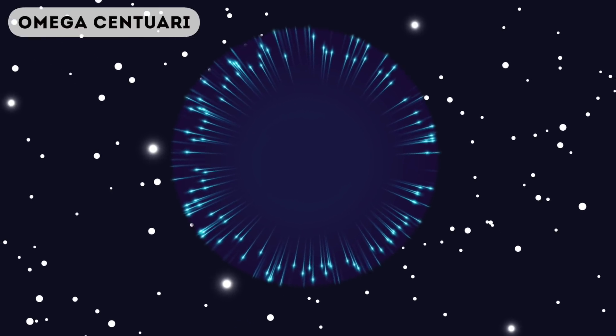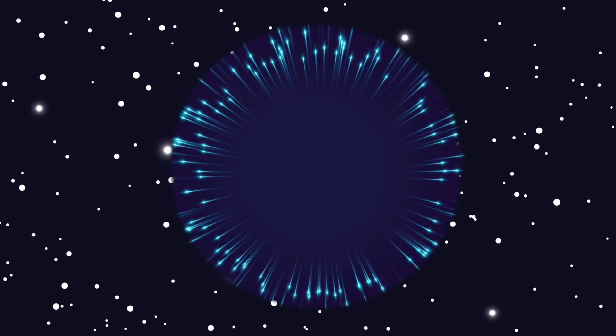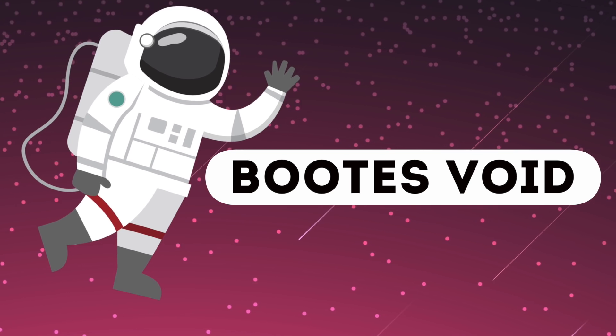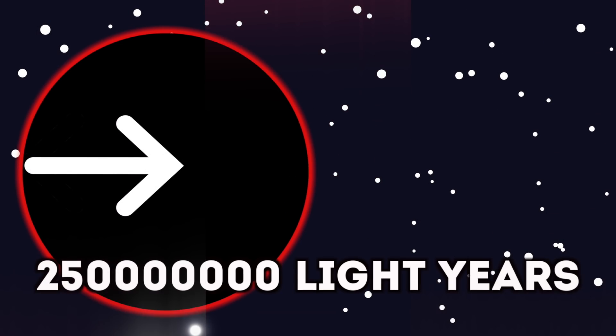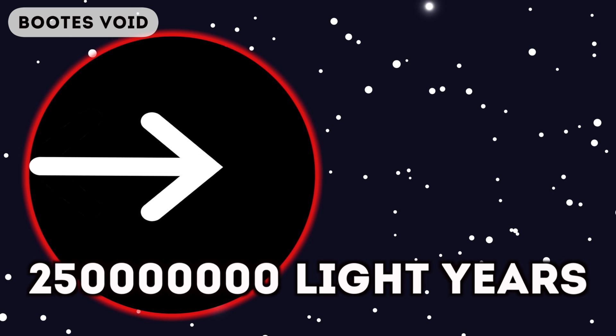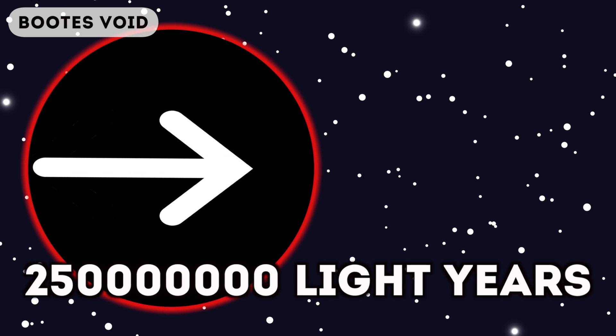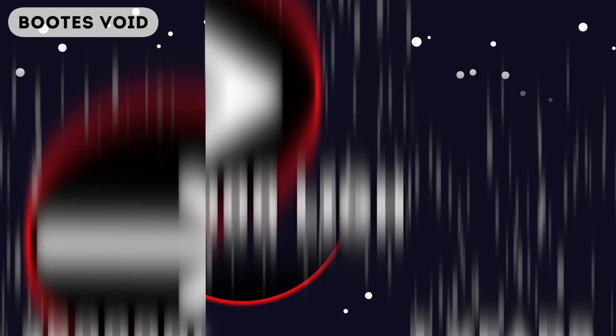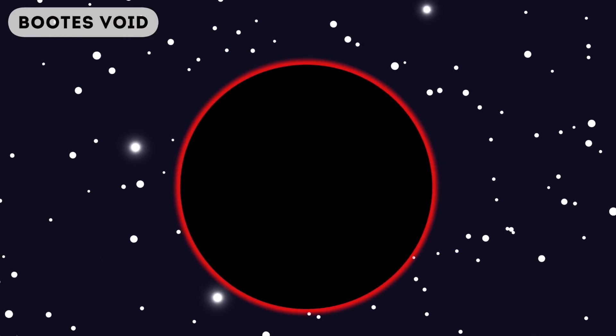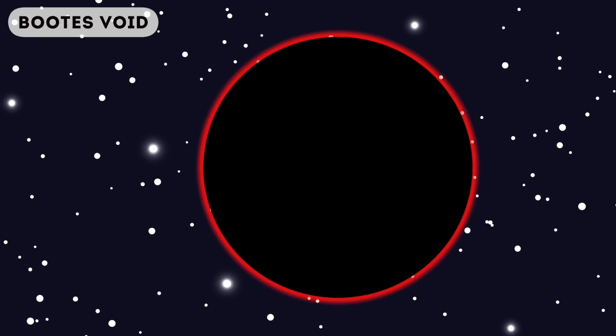But that's pretty tiny compared to the Boötes Void. The Boötes Void makes everything else we've looked at completely microscopic. It has a diameter of 250 million light years and it's actually a spherical region of space containing a few galaxies. But some people classify the Boötes Void as a supercluster.